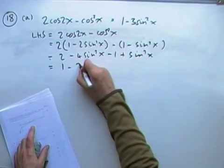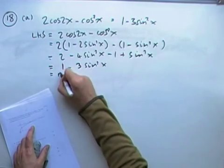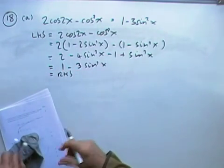2 minus 4 sine squared x, although I know that's not really tidying it up, plus sine squared x, but this bit is. So that's 2 taken by minus 1, minus 4, plus 1, minus 3. So that's it done. So now I'll say, equals right-hand side, and that's part A.